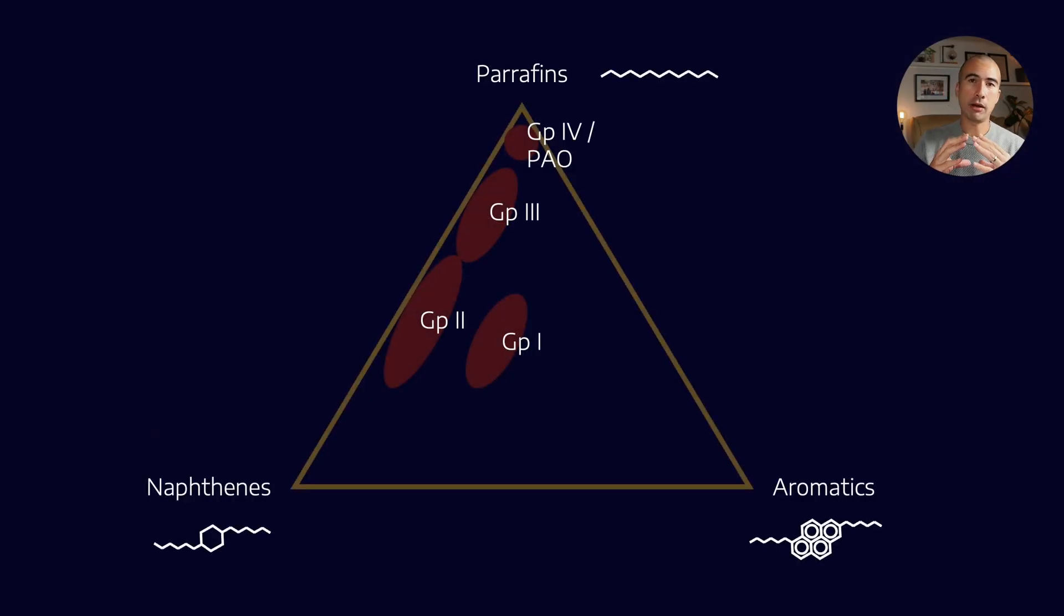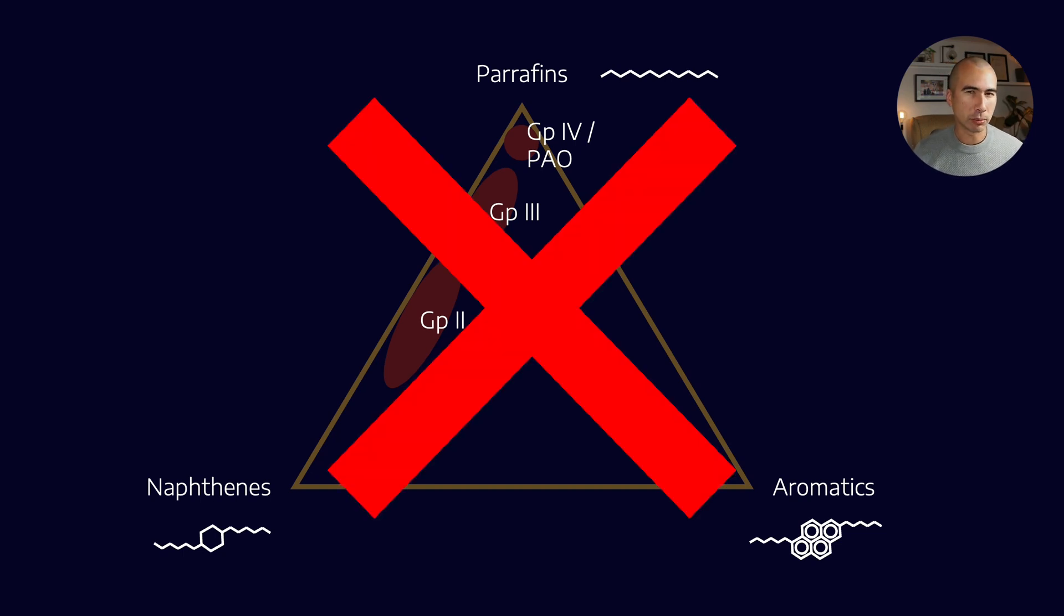But we've also had this paradigm that we've talked about a few times where we think of group 1 through 4 as being on this triangle with aromatic, naphthenic and paraffinic molecules. The exercise of refining going from group 1 to group 2 to group 3 is an exercise in getting more paraffinic, and of course PAO represents the very top of that chain.